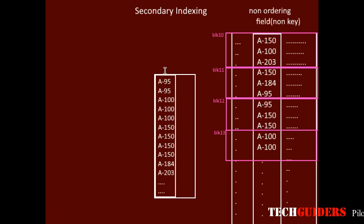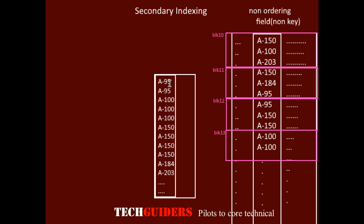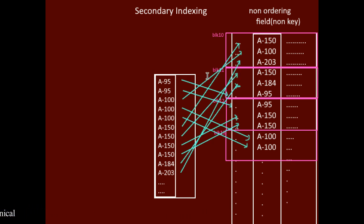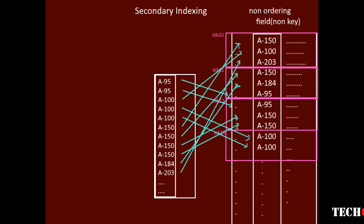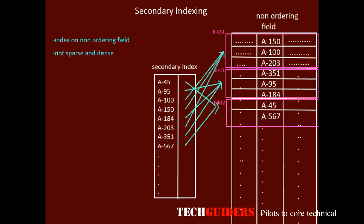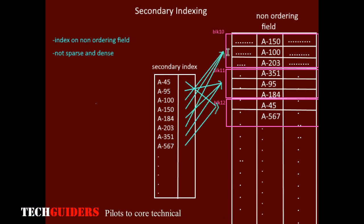Each index entry consists of the index search key and a pointer. This pointer can be a record pointer which points to the exact record address, or it can be a block pointer which points to the block containing the record.